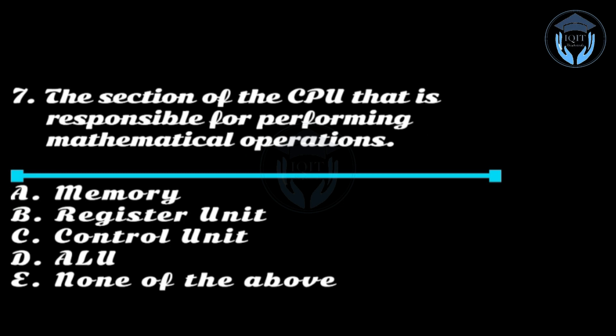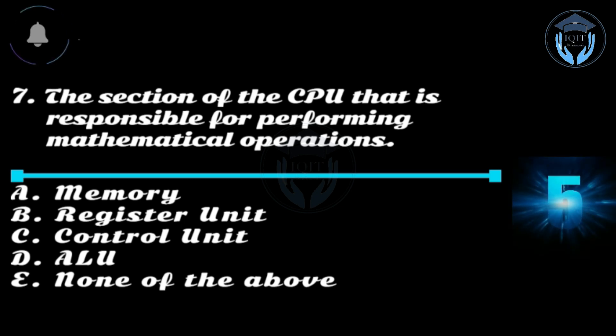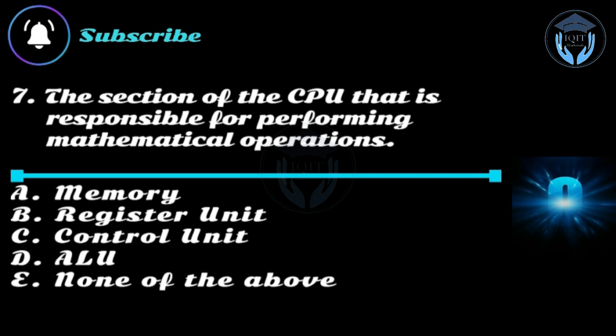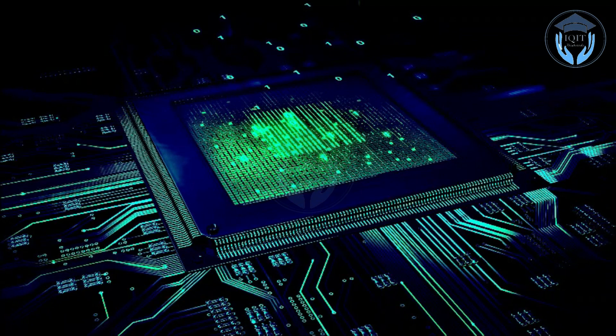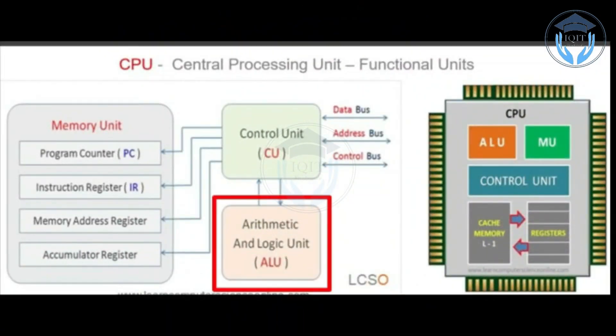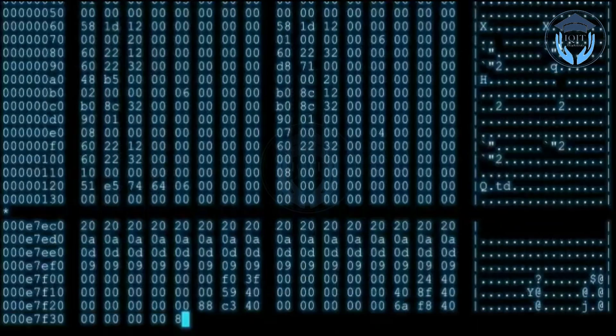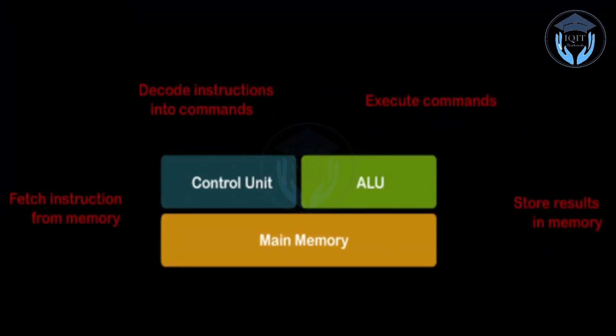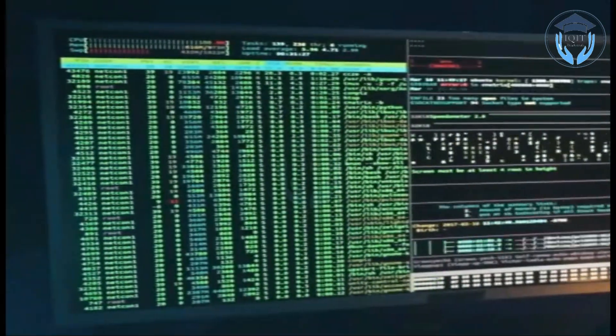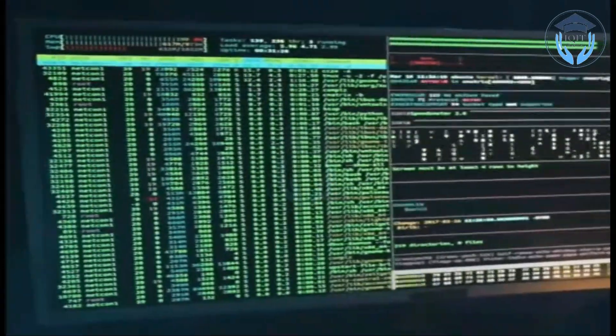Question seven: The section of the CPU responsible for performing mathematical operations is — option A: memory, option B: register unit, option C: control unit, option D: ALU, option E: none of the above. Answer: option D, ALU. The arithmetic logic unit is a digital circuit that performs arithmetic and logical operations such as addition, subtraction, multiplication, division, bitwise AND, bitwise OR, and comparison operations. The ALU receives input data from memory and registers, performs the operation, and stores the result in registers or memory.